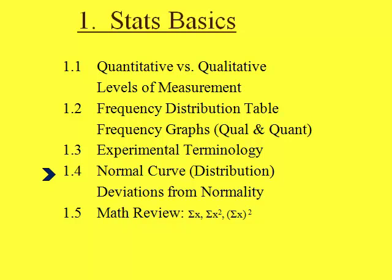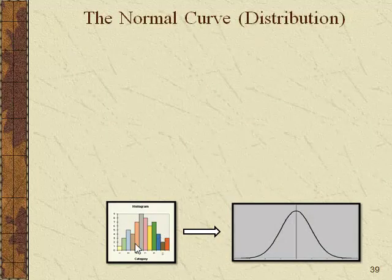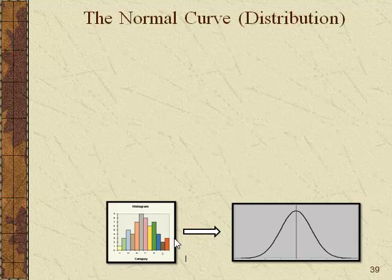In section 1.4 we're going to talk about the normal curve, also known as the normal distribution, and some ways in which the normal curve can get messed up — the deviations from normality. The normal curve is an extension of the frequency distribution we looked at before, known as the histogram, or you could think about it as the line graph that would connect the tops of these different columns.